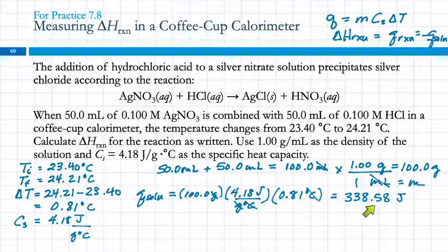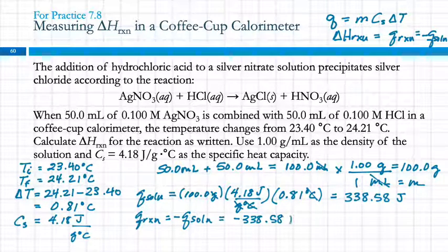So Q solution is positive. How do I know it's positive? Well, I did the temperature change correctly. It has to be final minus initial. If it gets colder, the final is lower, and you'll get a negative delta T. And that's how you'll end up with a negative Q. So you have to do that delta thing in the right direction. So the solution gained energy. It went up in temperature. So the reaction lost energy. So Q for the reaction, then, is equal to negative Q for the solution. So negative 338.58 joules.